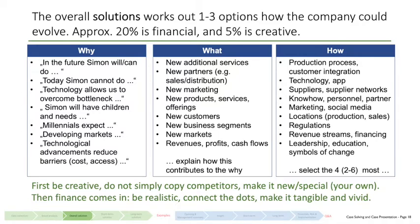For the 'how' part, it is important that not every suggestion — like adding a new service — might need all of these aspects. If we add a new service, we may just need a new app. So whatever the solution is, we need to select the three or four most important 'how' aspects to make that new service available to serve Simon's new needs. That's the logic of the argumentation.